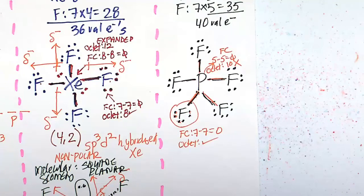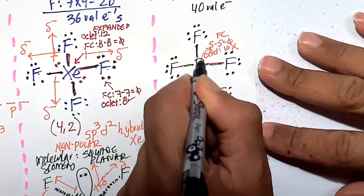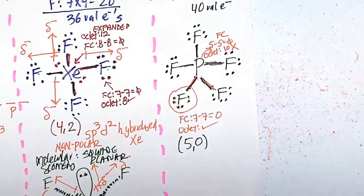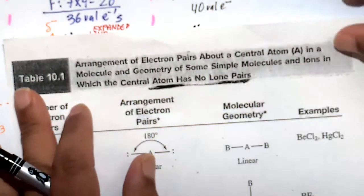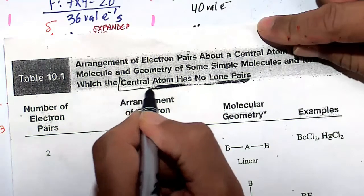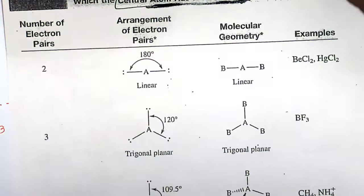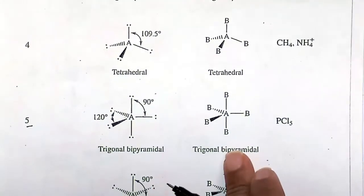Let's take a look at the number of bonds and number of lone pairs. So we have 5 bonds. 1, 2, 3, 4, 5, 5 bonds, 0 lone pairs. So what's 5 and 0? 5 bonds and 0 lone pairs is going to be, we're going to use table 10.1 or whatever version from whatever textbook you're using. Make sure you realize it has no lone pairs. And 5 bonds and 0 lone pairs is trigonal bipyramidal.